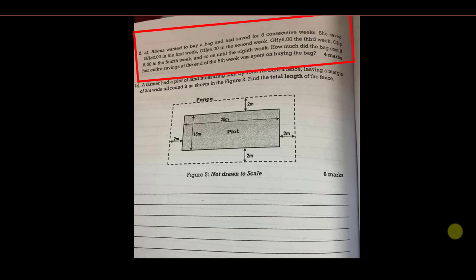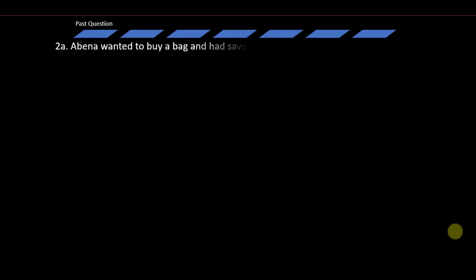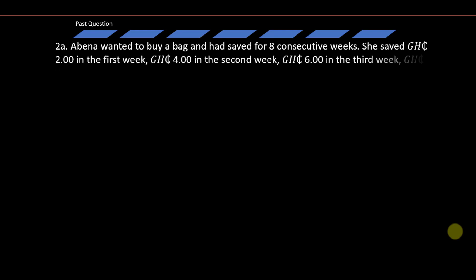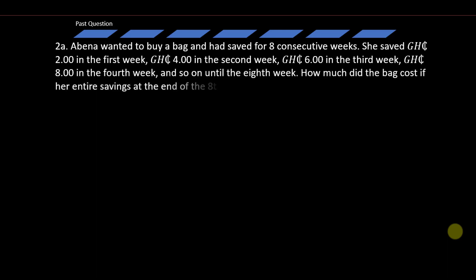Now let's move to the question. This was the question or the extract from the set of questions that were brought that year. We are going to be answering question 2a. Abina wanted to buy a bag and had saved for eight consecutive weeks. She saved 2 Ghana cedis in the first week, 4 Ghana cedis in the second week, 6 Ghana cedis the third week, 8 Ghana cedis in the fourth week and so on until the eighth week. How much did the bag cost if her entire savings at the end of the eight weeks was spent on buying the bag?